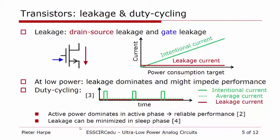Another aspect of transistors to discuss is leakage. Especially in modern technologies, there's quite a bit of leakage in transistors, which can be either from drain to source or into the gate. If you design a circuit for a very high power consumption target, this often doesn't matter much because your intended current is anyway much higher than the leakage. However, if you go to very low power consumption numbers, the leakage becomes important or even dominates the total power, and the performance of the circuit may not be what you expected.